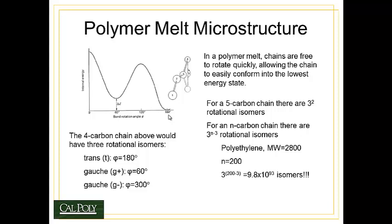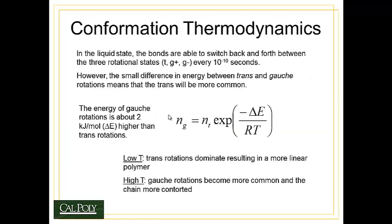Because of these rotations in the polymer melt, the polymer chains are going to be very twisted up and contorted. It turns out that this rotation is very fast — polymer bonds are rotating from trans to gauche every 10⁻¹⁰ seconds. But the small energy difference between trans and gauche states means that trans rotations will be slightly more common. We can use an Arrhenius equation to determine the number of gauche rotations: the number of gauche rotations equals the number of trans rotations times e^(−ΔE/RT), where ΔE is about 2 kilojoules per mole. At low temperatures trans rotations dominate and polymers tend to be more linear; at high temperatures gauche rotations become more common and you get more contortion in the chain.